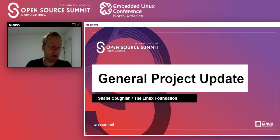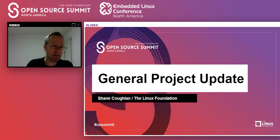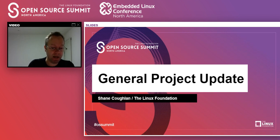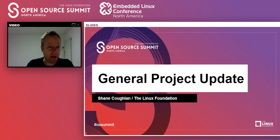General project update: the project has been very busy because our de facto industry standard, which is seeing increased adoption around the world — we had Cisco announce conformance about two weeks ago — is now being made into a formal standard via ISO. We're going through a fast-track process called Publicly Available Specification, in collaboration with the Joint Development Foundation. The process converts de facto standards into a formal standard in about nine months instead of 50 or 60.